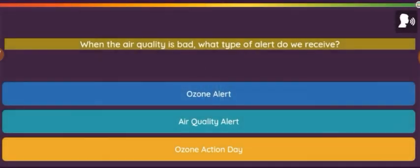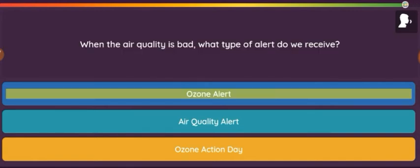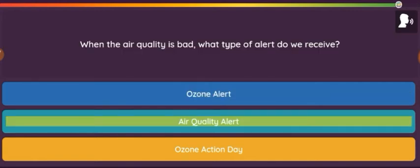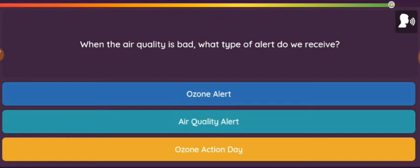Question: When the air quality is bad, what type of alert do we receive? Option 1: Ozone alert. Option 2: Air quality. Option 3: Ozone action day.